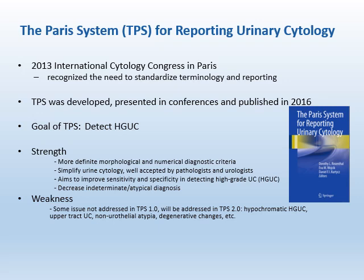The Paris system, abbreviated as TPS, for reporting urinary cytology was developed, presented in conferences, and finally published in 2016. This is the book for the Paris system. The goal of TPS is to detect high-grade UC.